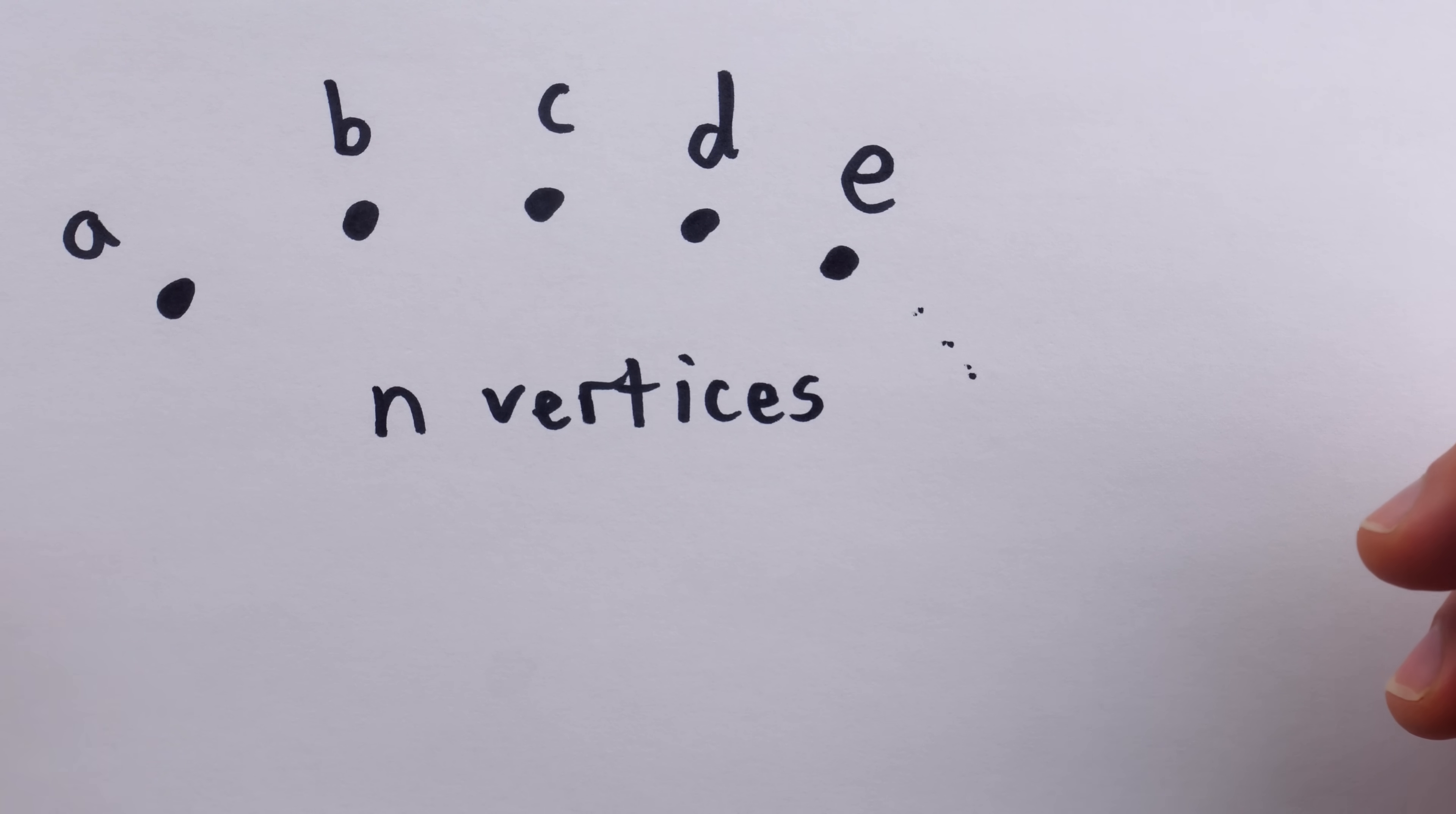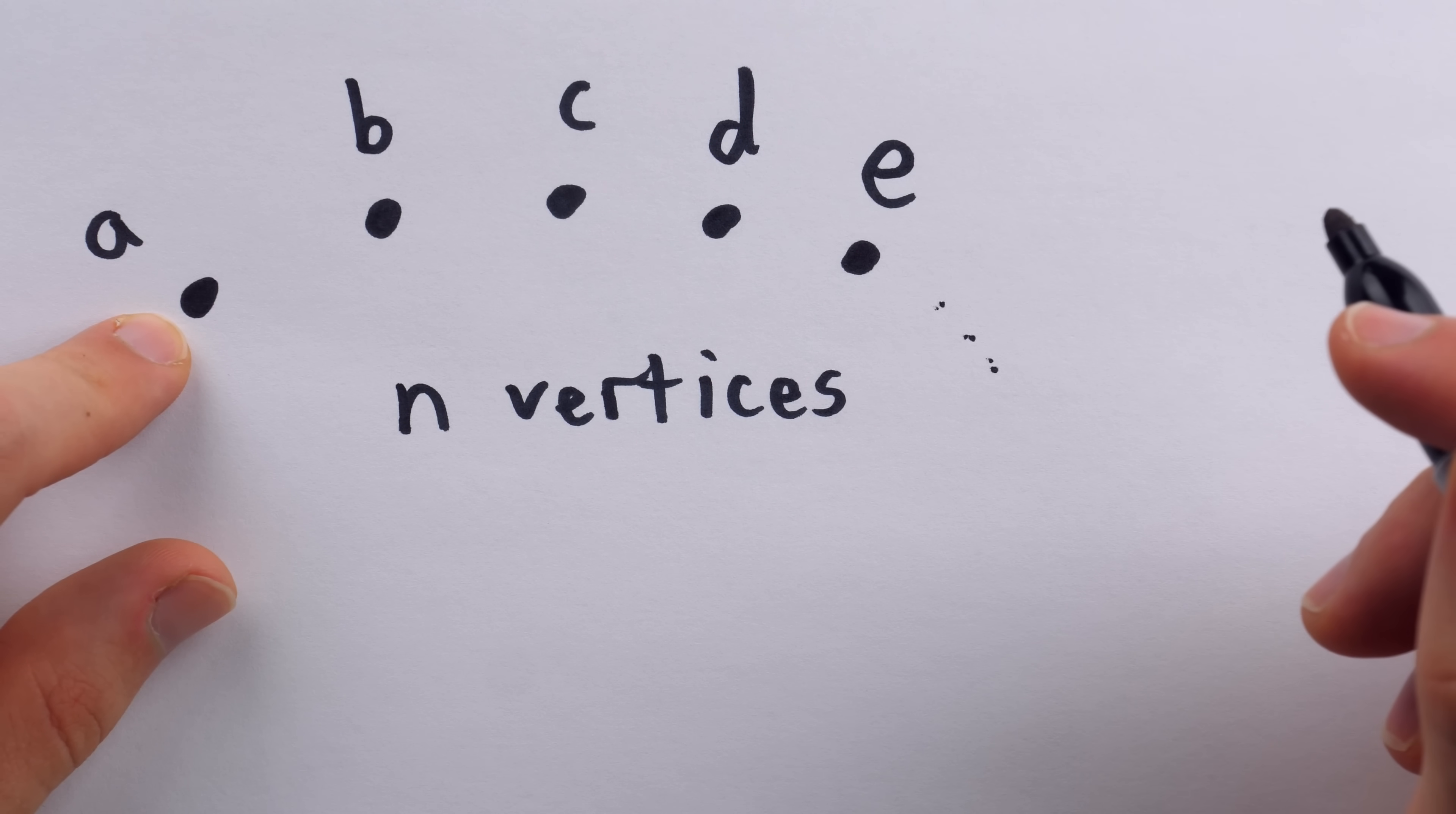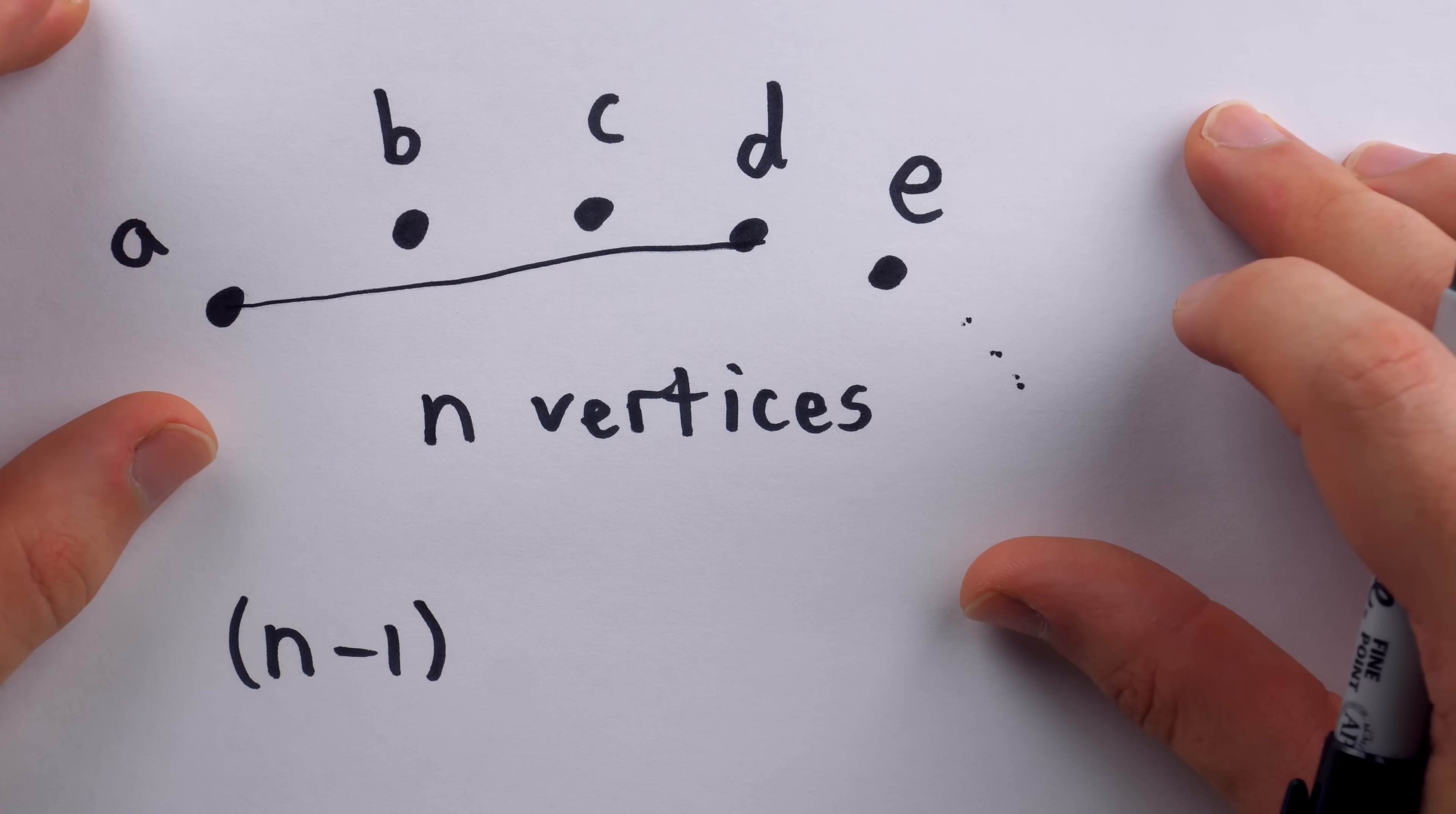So if we're going to construct a perfect matching, every vertex needs to get matched up with some other vertex. So we could just arbitrarily pick our first vertex to match. Let's say we start with A, and we're going to match A to some other vertex. Now how many vertices do we have to choose from that we could match A to? Well, there's N vertices total, we can't match A to itself, so that leaves N minus one choices. So let's jot that down over here, N minus one. Now just for our picture, let's say we decide to match A to the vertex D. Now two vertices have been matched together, and so N minus two vertices remain.